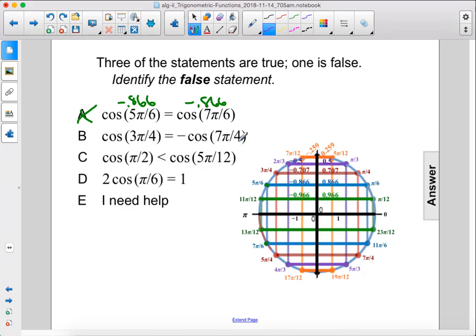Cosine of 3π over 4, which is here, this red line, which is negative square root of 2 over 2, or negative 0.707, equals negative cosine of 7π over 4.